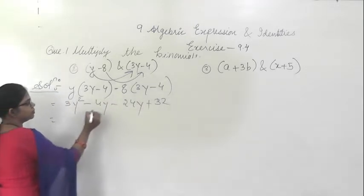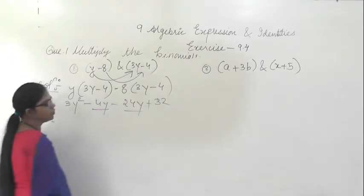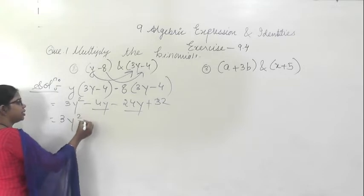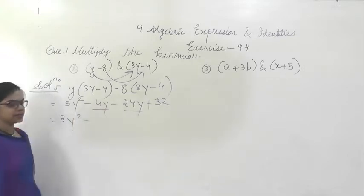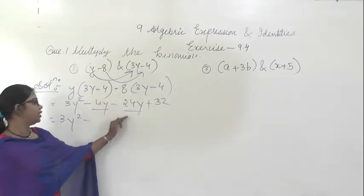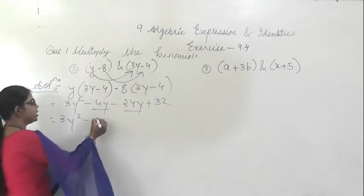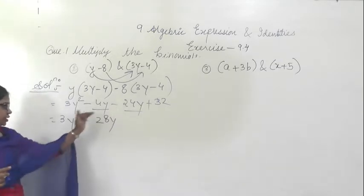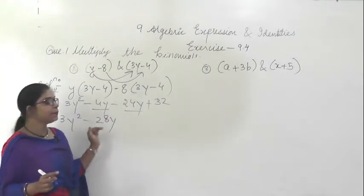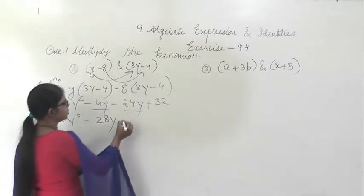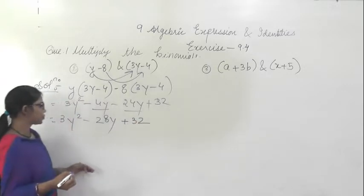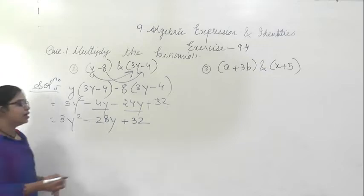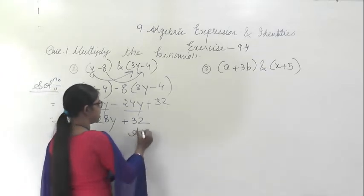Here, 4y and 24y are like terms. Minus minus is plus, so 4y and 24y added gives 28y. Sign of the greater digit is minus, so it will be minus 28y plus 32. We cannot solve it further, so this is the answer.